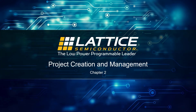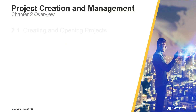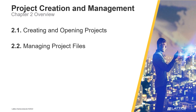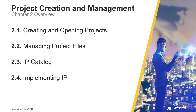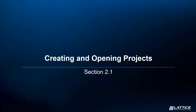Chapter 2: Project Creation and Management. In this section of the Radiant introductory training series, we will be discussing some of the basics for creating and developing projects using Lattice Radiant. Chapter 2 consists of five sections: creating and opening projects, managing project files, IP catalog, implementing IP, and using source templates.